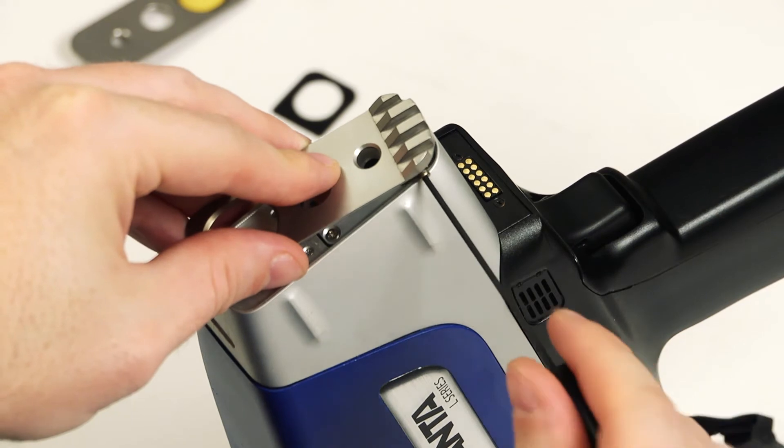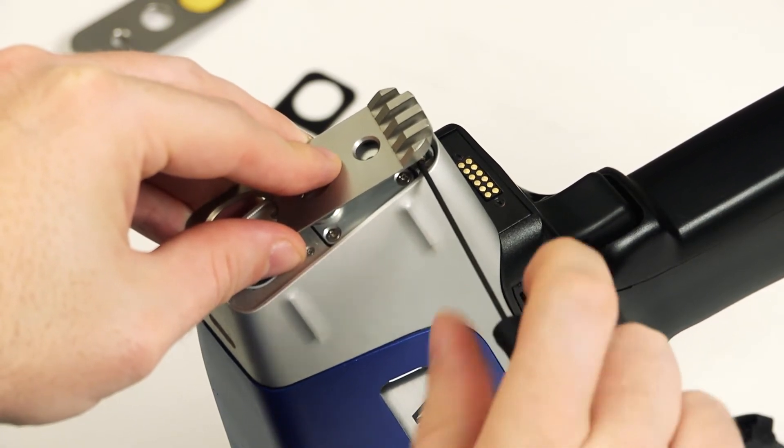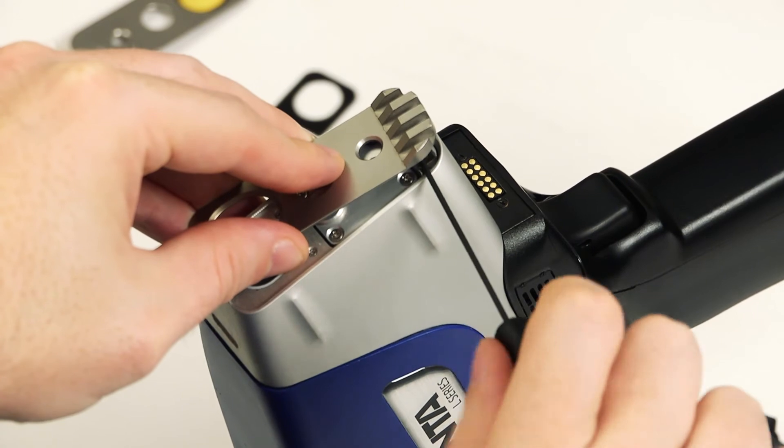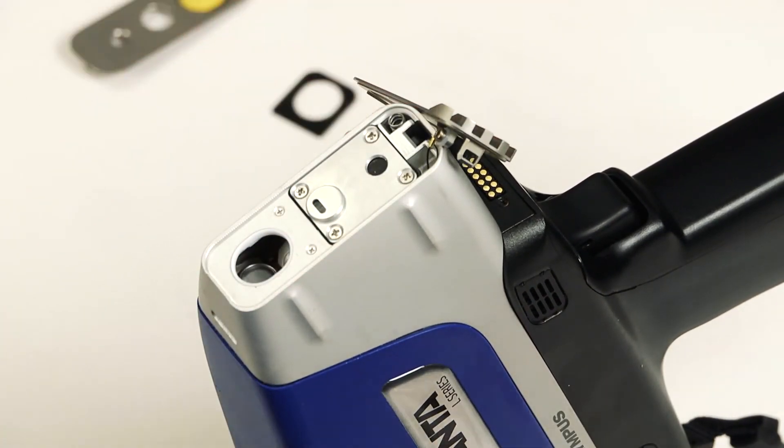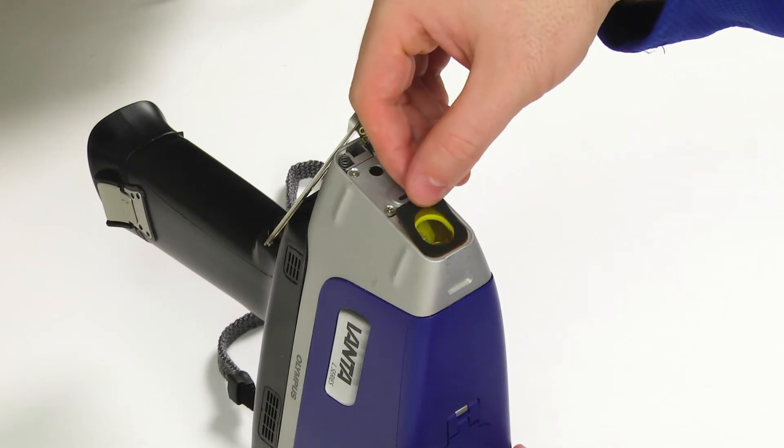Reattach the tether to the hot heel faceplate and hang it off to the side. Place the window and gasket on the analyzer with the window side down.